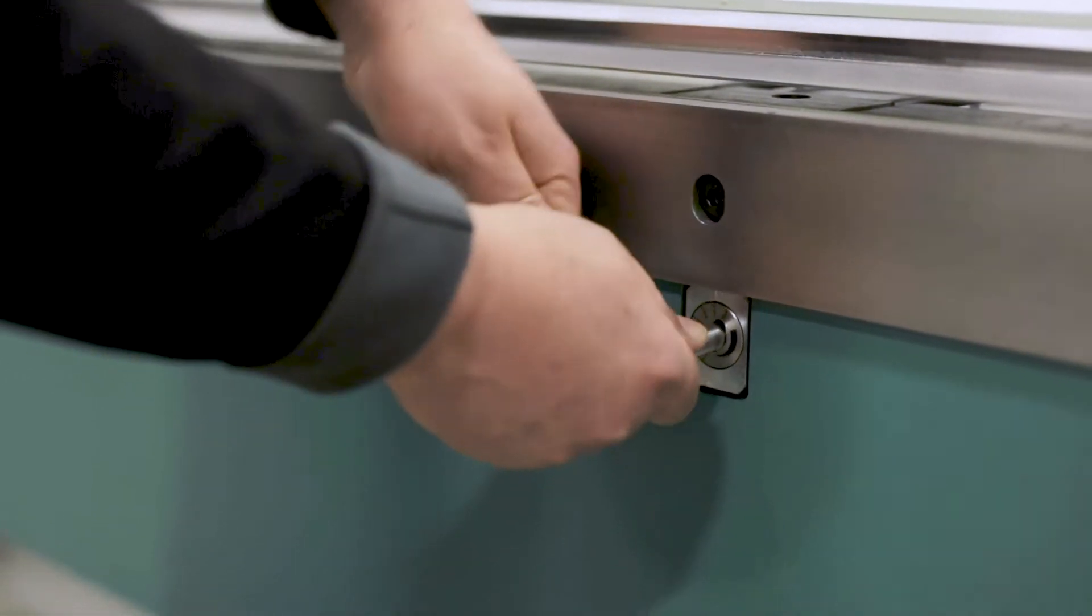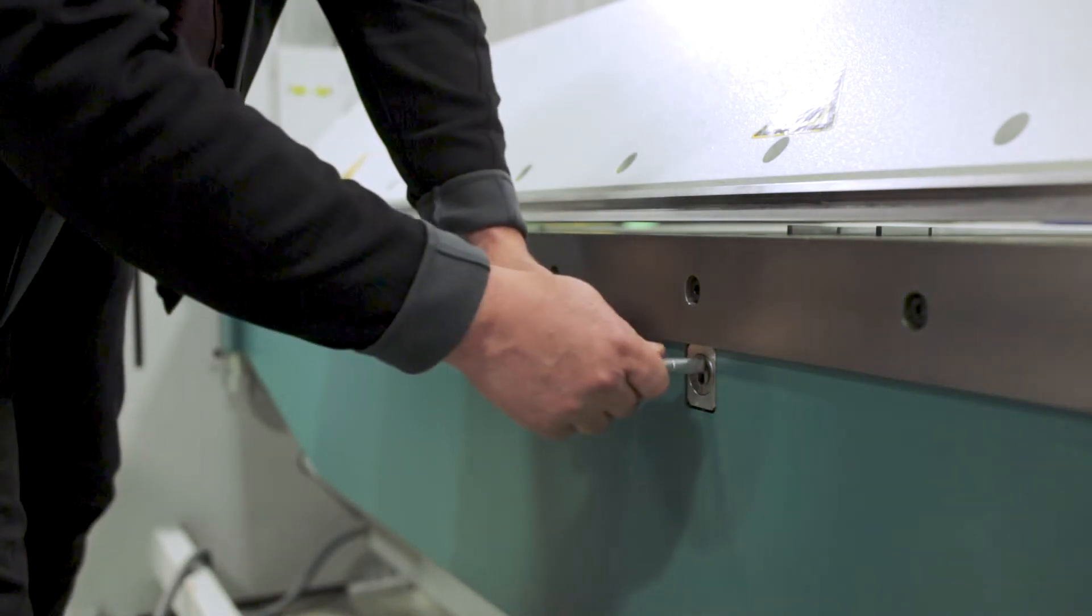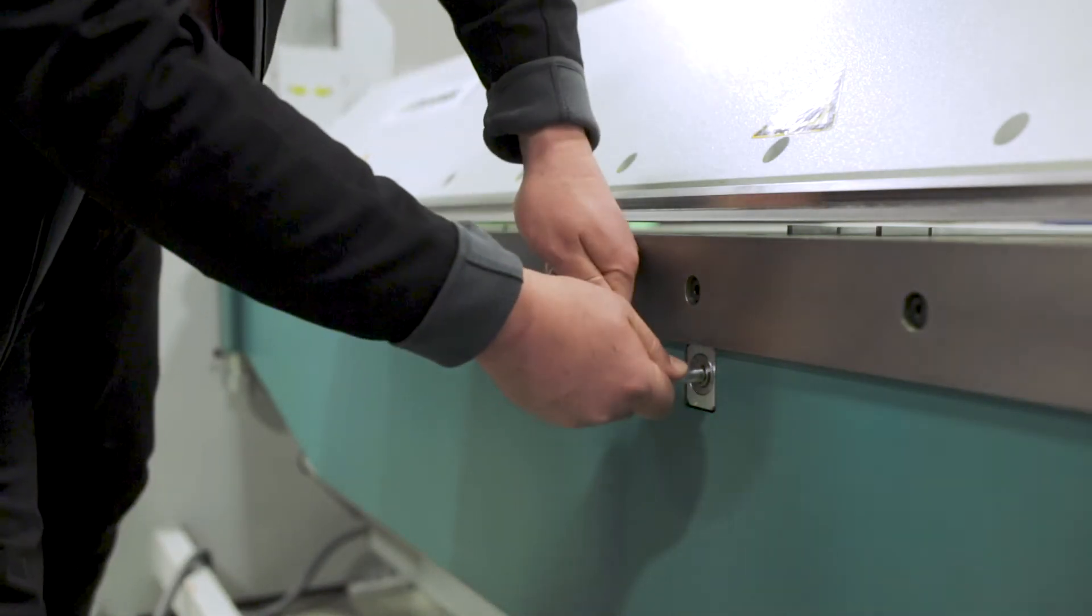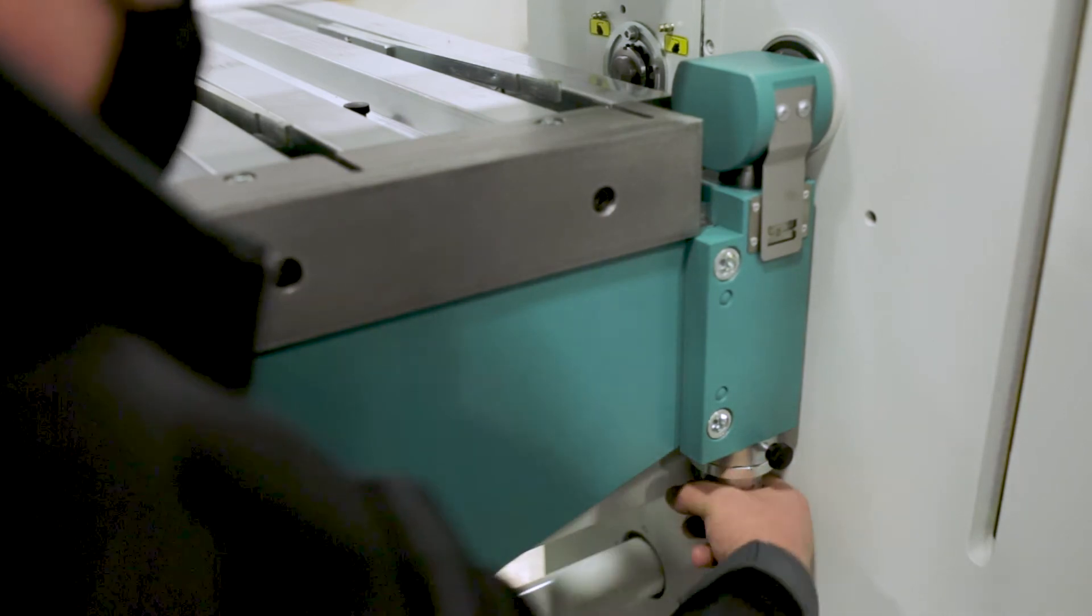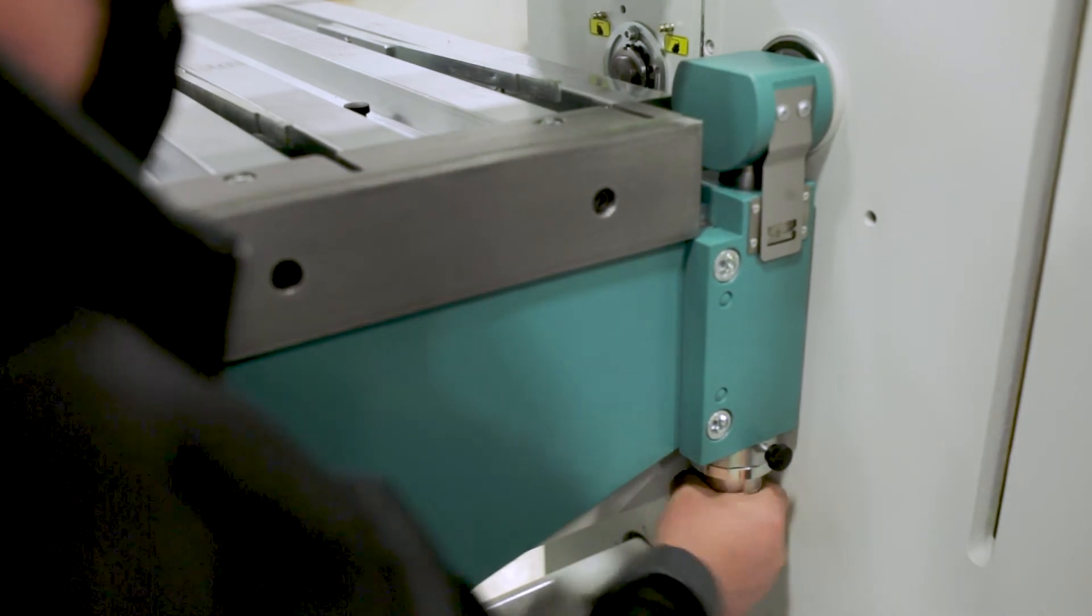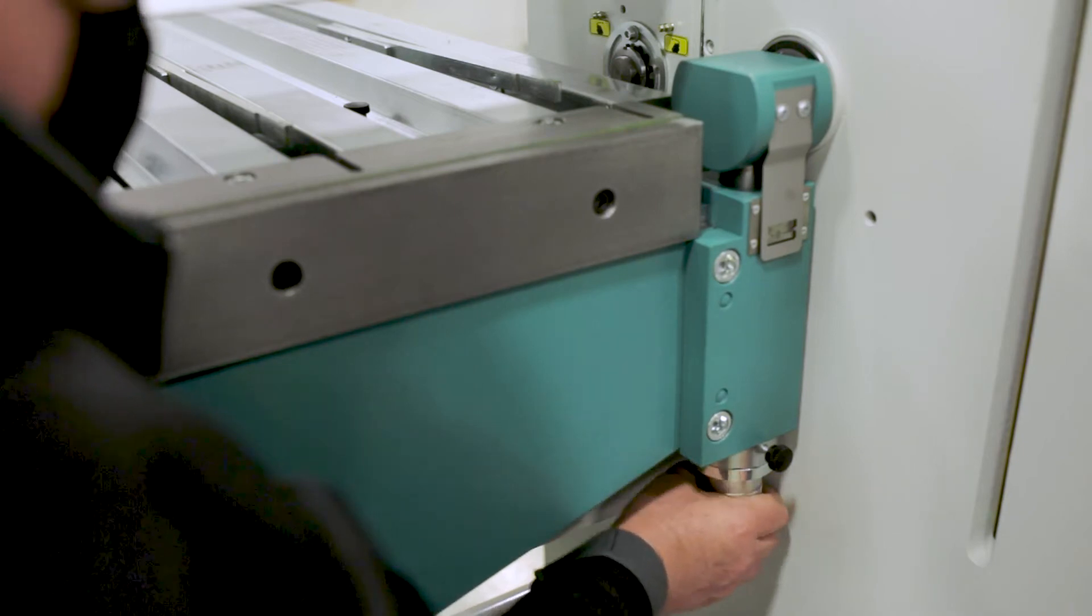Adjusting for spring back or deflection with Junelle's unique crowning design means shimming is a thing of the past. Folding radiuses are easily adjusted with the turn of a dial located at each end of the lower bending beam.